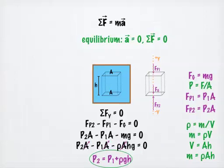This expression tells us that if we know the pressure P sub 1 at a higher depth, we can find P sub 2, the larger pressure at greater depth, if we know the density of the fluid and the difference in the depths.